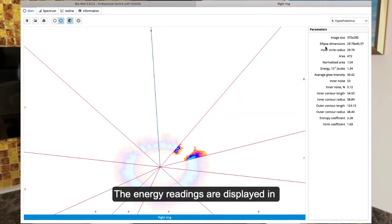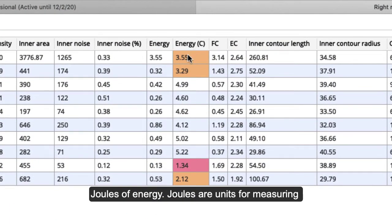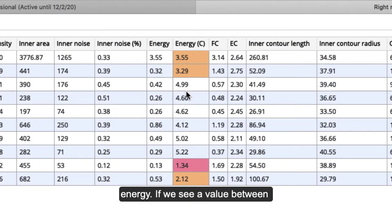The energy readings are displayed in joules of energy. Joules are units for measuring energy. If we see a value between 4 to 6 joules in the energy C column, that's considered within the norm.